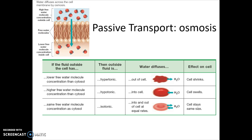There are a couple of situations when we refer to cells and osmosis. If the concentration of water outside is higher than inside the cell, that's called hypotonic. I remember it because the cell is going to behave like a hippo and just swell up real big. In hypotonic conditions, the cell gets bigger because more water comes in.